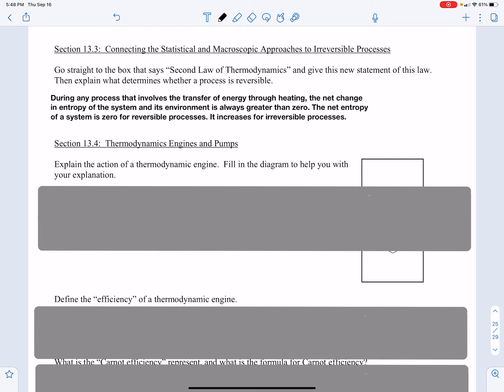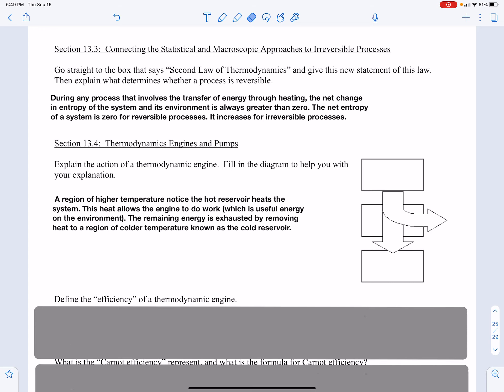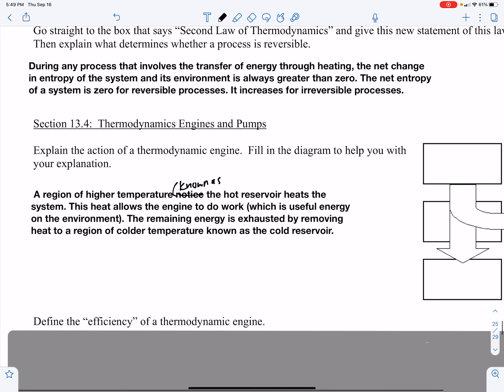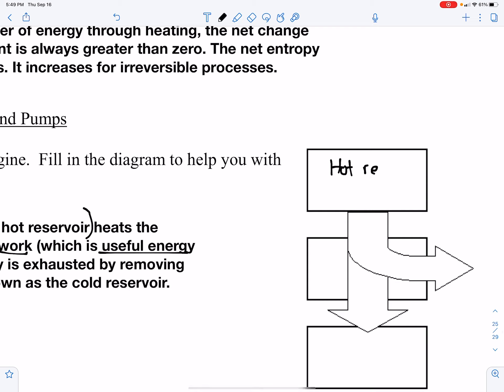Section 13.4 Thermodynamic Engines and Pumps. Explain the action of a thermodynamic engine and fill out the diagram to help you with your explanation. A higher region of temperature, known as the hot reservoir, heats the system. This allows the engine to do work, that being useful energy on the environment. The remaining energy is exhausted by removing heat to a region of colder temperature known as the cold reservoir.